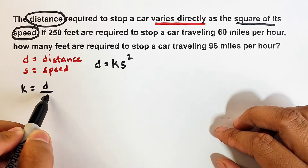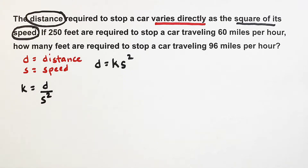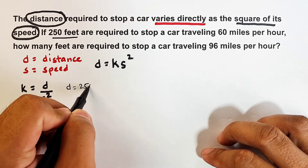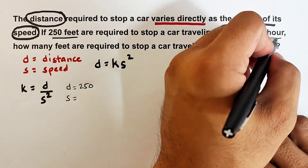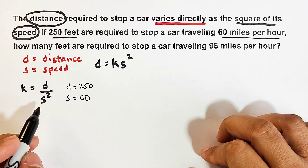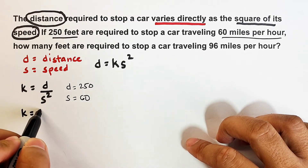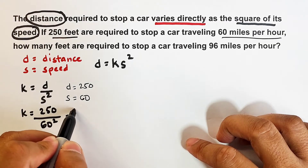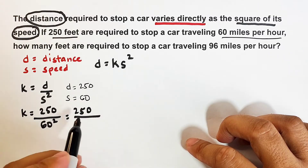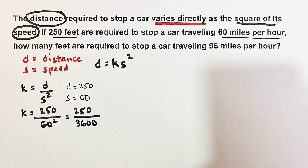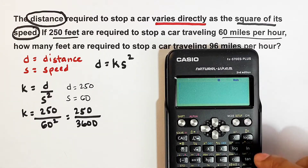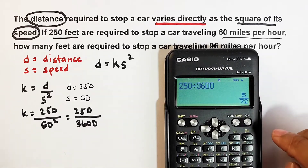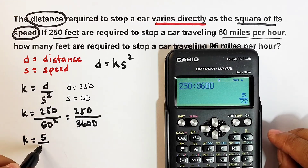To find k, we jot down the values of each variable: d equals 250 feet and s equals 60 miles per hour. So k equals 250 over 60 squared. Simplifying, 60 squared is 3600, giving us k equals 250 over 3600. Using a calculator, 250 divided by 3600 gives us k equals 5 over 72.